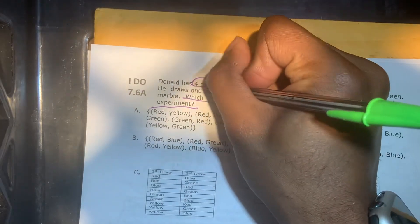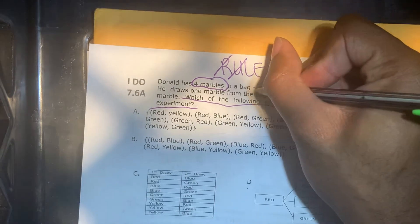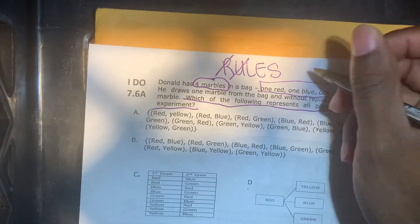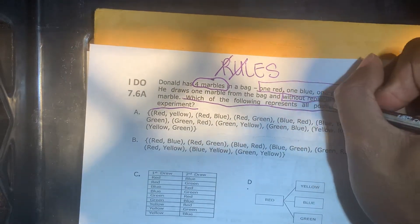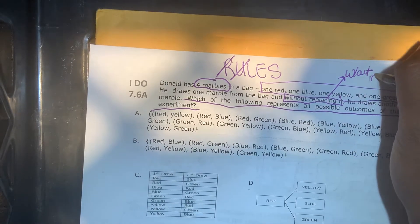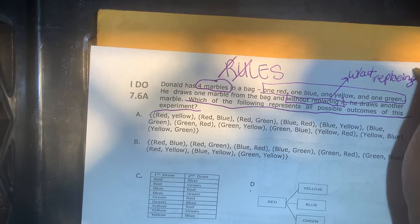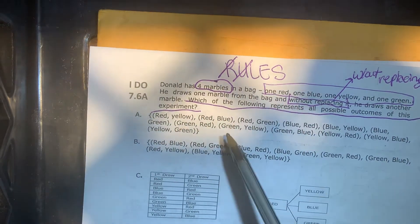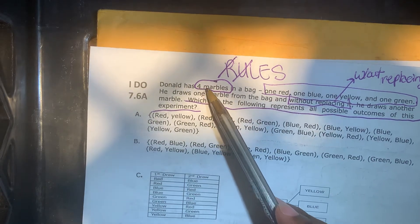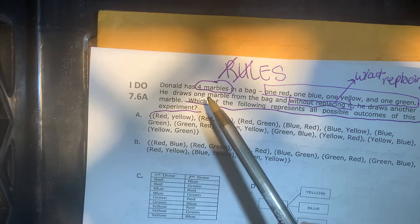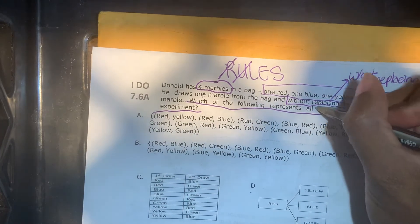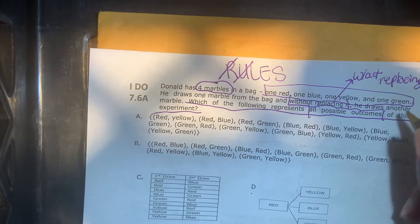Cross off the U, label and annotate. There are four marbles in a bag — one red, one blue, one yellow, one green. He draws one marble without replacing it. Without replacing means that when he draws the first time it affects the second draw: first draw is one out of four, then after choosing one marble it's one out of three. We're looking for all possible outcomes of this experiment.